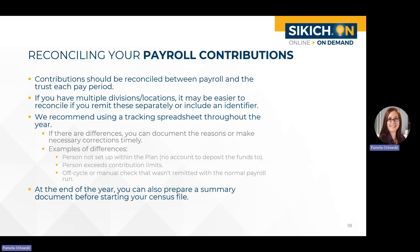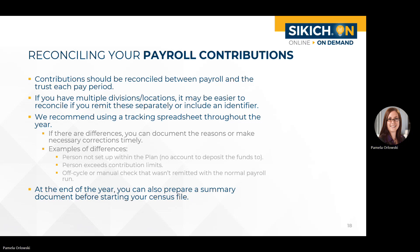We recommend reconciling between payroll and the trust and looking at the number of days each pay period. After you've remitted that payroll, ensure you've saved or printed a copy of that payroll register. Remit your contributions through whatever process is required by the service provider, and then you can usually obtain a remittance confirmation or some other form of support once those contributions are posted to participant accounts. You want to make sure they actually posted to the accounts—that's a separate check, because just because you remitted it doesn't mean the service provider actually allocated those contributions to participants.